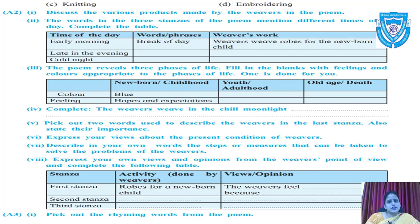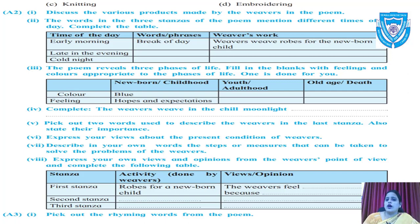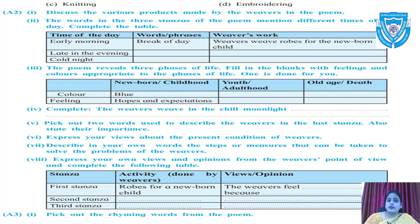The next question asks you to complete a table about words in the three stanzas that mention different times of the day. In the morning, the word used in the poem is 'break of day,' and they are weaving robes for a newborn child. In the second stanza, the time is late in the evening. In the third stanza, the words used are 'cold night,' 'moonlight,' and 'chill,' and they are weaving a dead man's shroud. These questions can be answered using your textbook.